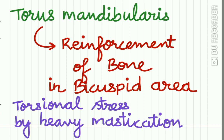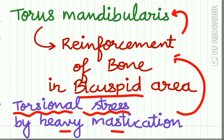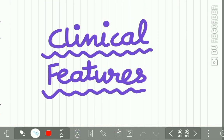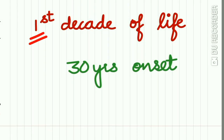It is also suggested that torus mandibularis occurs due to reinforcement of bone in the bicuspid or premolar region. It occurs due to torsional stresses caused by heavy mastication, which causes reinforcement of bone in the premolar area, resulting in torus mandibularis.